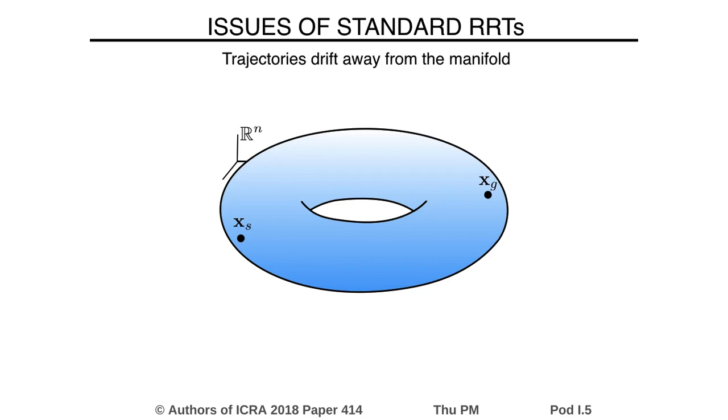On the other hand, discretization of the motion equations produces trajectories that drift away from the manifold, which disassemble the robot and thus make the simulation no longer reliable.